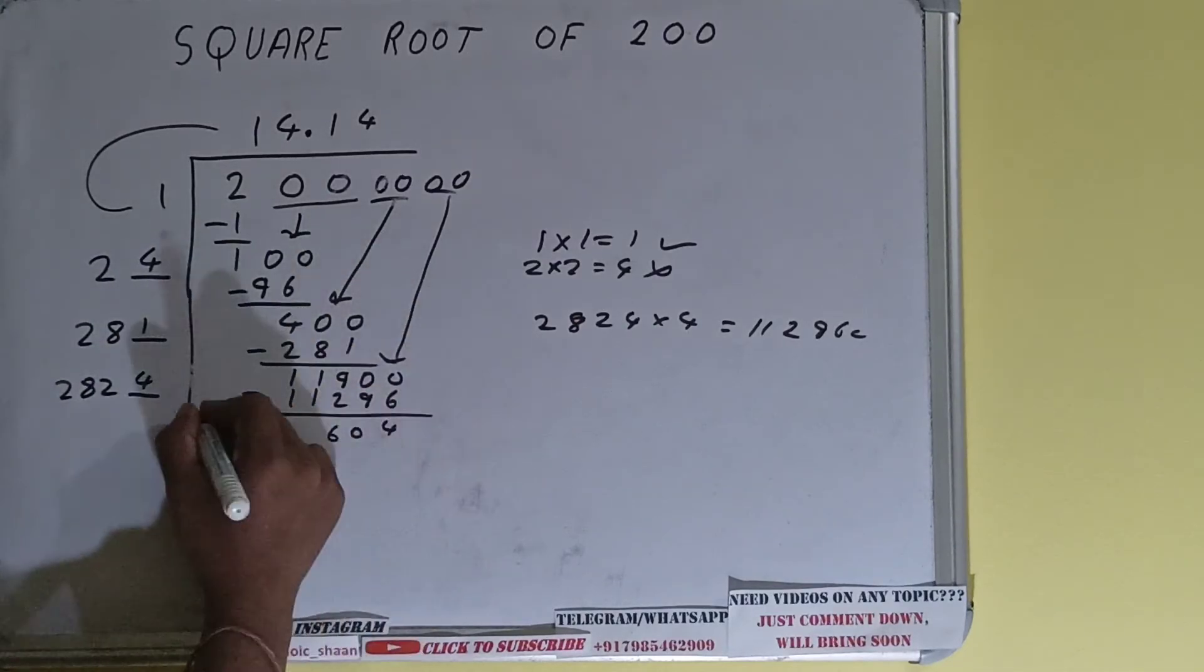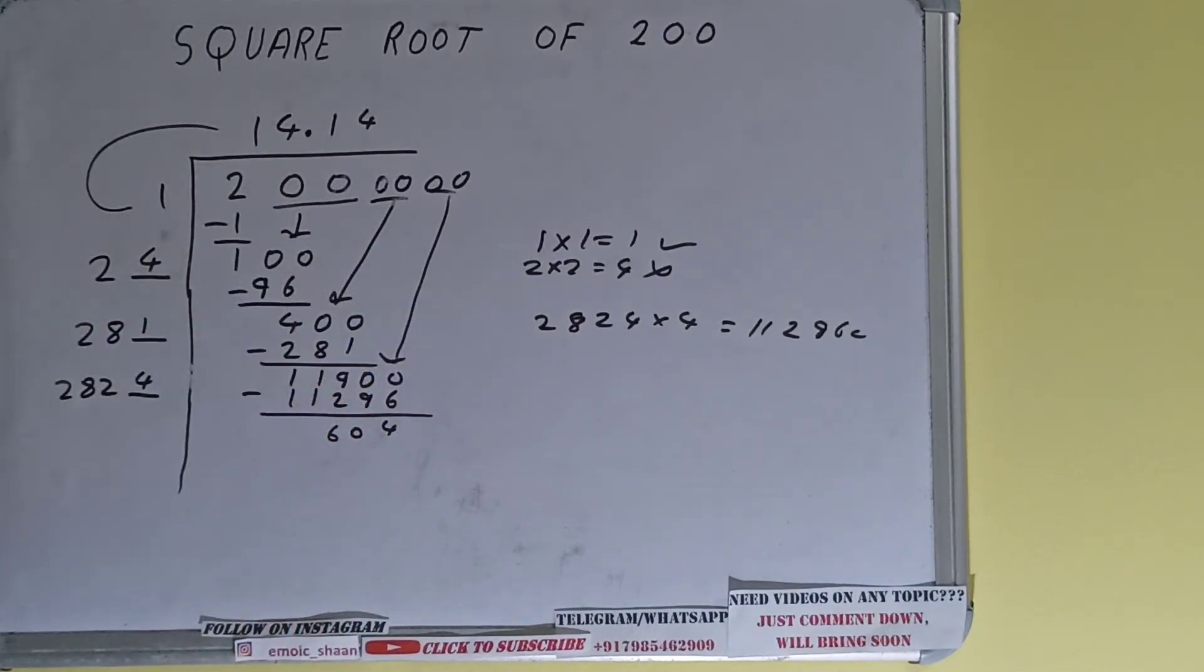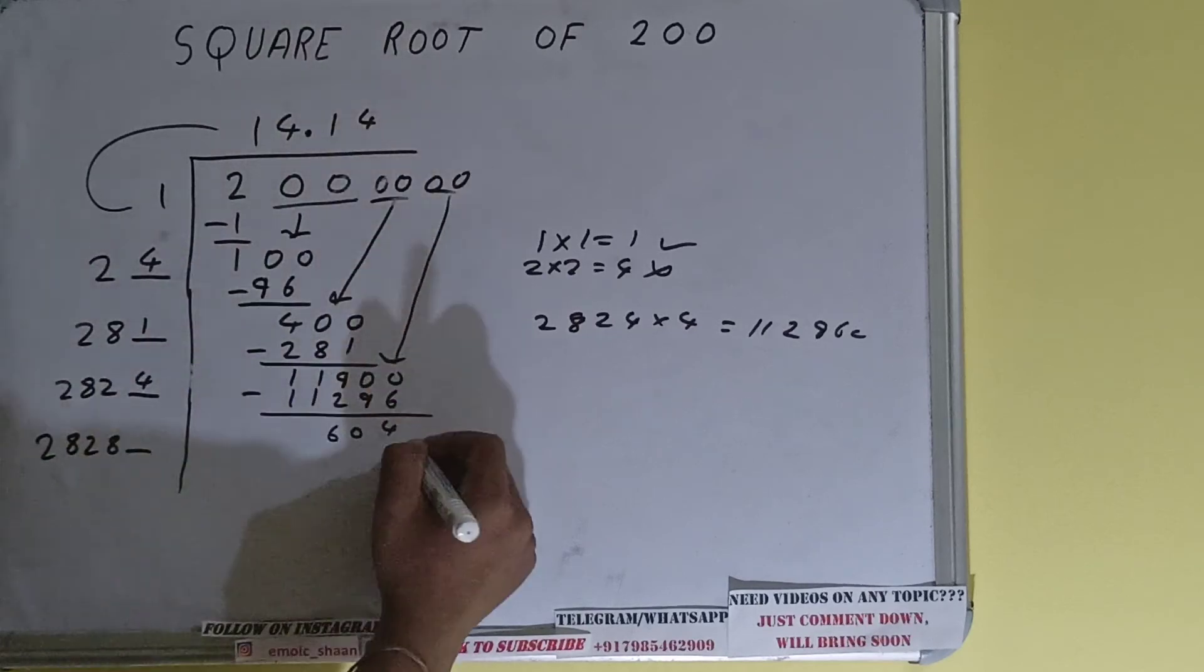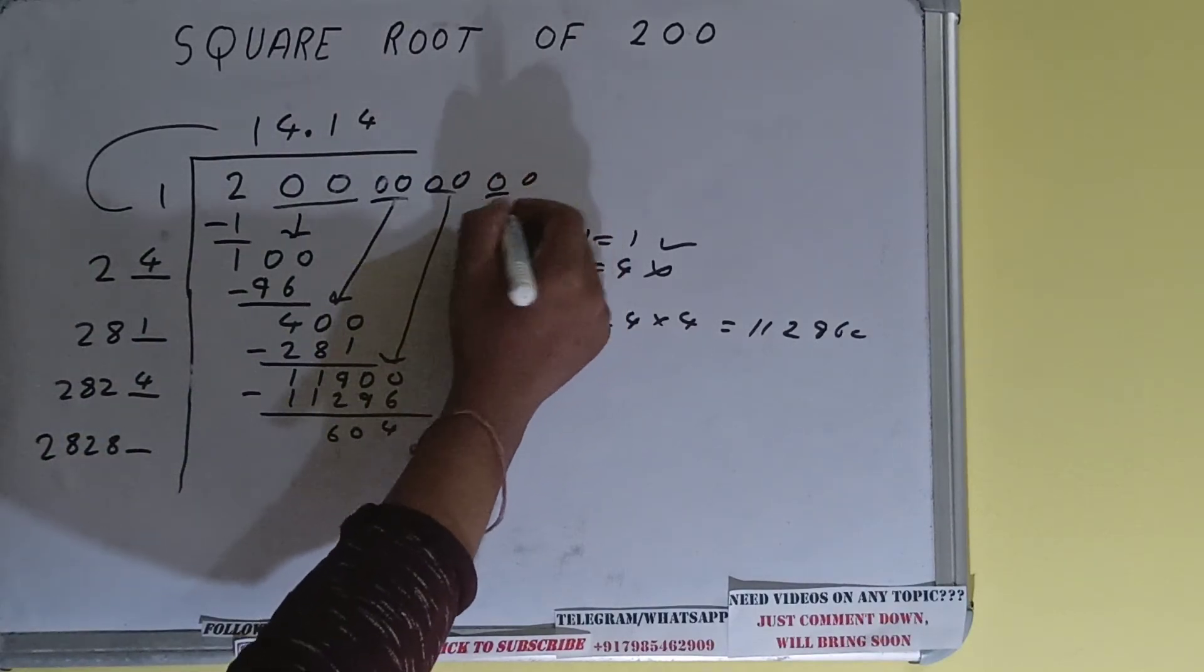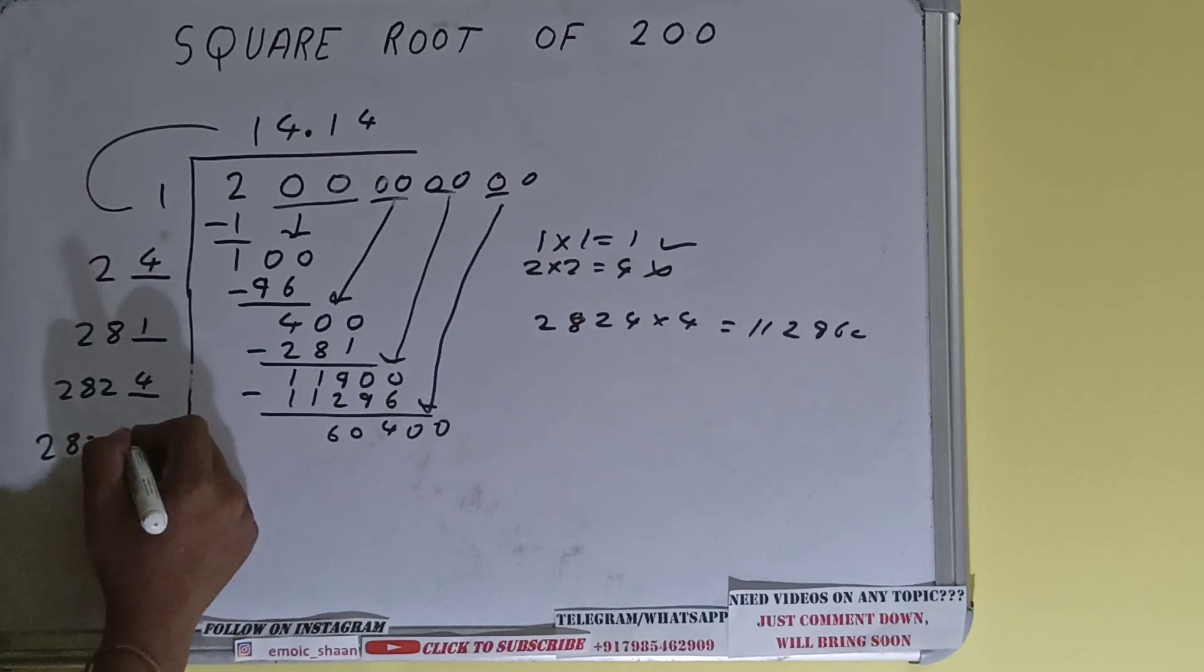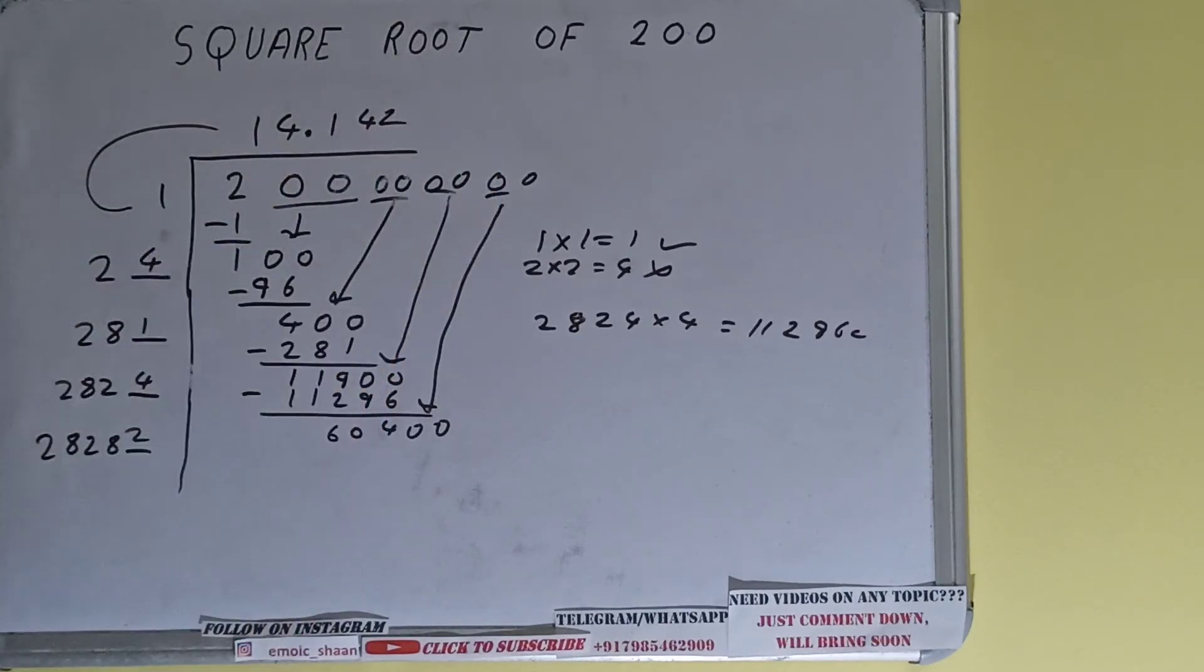We'll be left with 604. Now 2824 into 4 we did, right? So add both. 2824 plus 4 will be 2828 and one extra over here. Bring one more pair of zeros down and the number will become 60,400. Clearly two times will work, two here and two here, but we don't need to calculate because we already got our answer correct up to three decimal places.